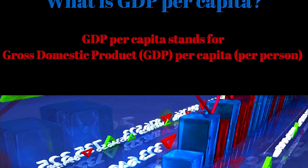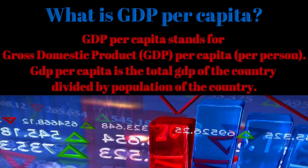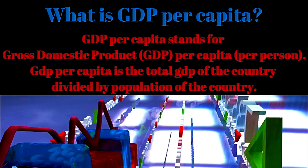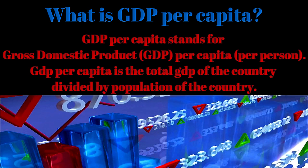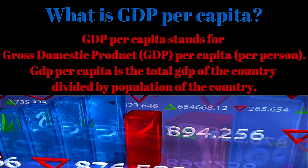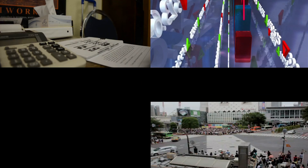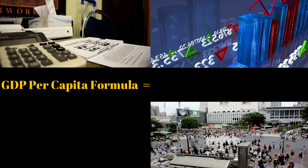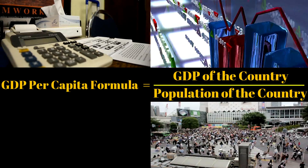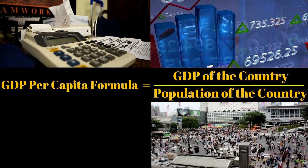What is GDP per capita? GDP per capita stands for Gross Domestic Product per person. GDP per capita is the total GDP of the country divided by the population of the country. The GDP per capita formula is very simple — all you need to do is find the GDP of the country and divide it by the population of that country.